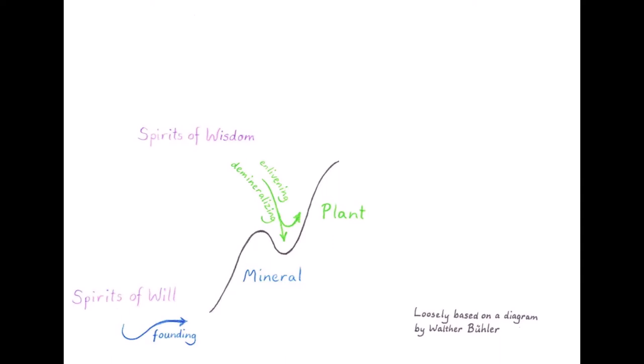Thus the plant suppresses the lower, transforming it. It is a law that no higher development is achieved without a relative deconstruction of the stage previously reached. Nowhere does a crystal, by refinement or differentiation, turn into a plant. On the contrary, the crystal shape must be destroyed, if organic life is to make its appearance.